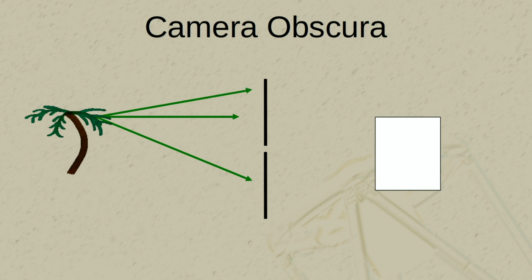Only the light that travels in this direction will make it through the small opening to the screen. That light will light up a small spot on the screen, and the spot of light will be green in color because the green light is what was scattered.